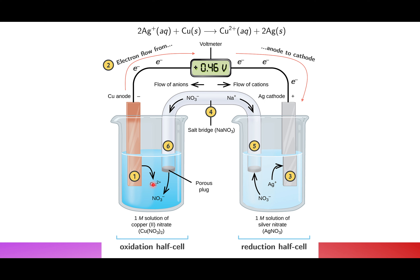Oxidation is going to take place here — the cation is produced and electrons are left within the metal. Metals, as we remember from forces of attraction in structure and bonding, allow the movement of electrons through a free sea of electrons within the structure. So electrons are able to move through the wire, moving through the voltmeter here.